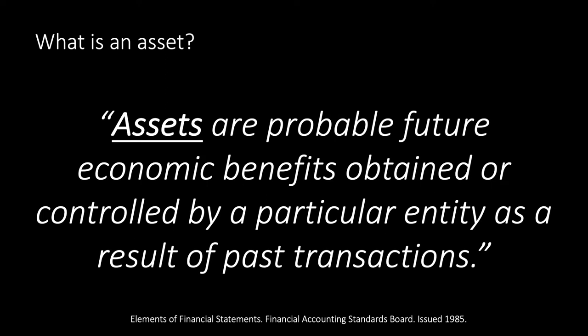So first, what is an asset? According to the Financial Accounting Standards Board, assets are probable future economic benefits obtained or controlled by a particular entity as a result of past transactions. In your own words, there are probable future economic benefits — so they're not guaranteed, but we think we'll get them — so they're probable, or likely.